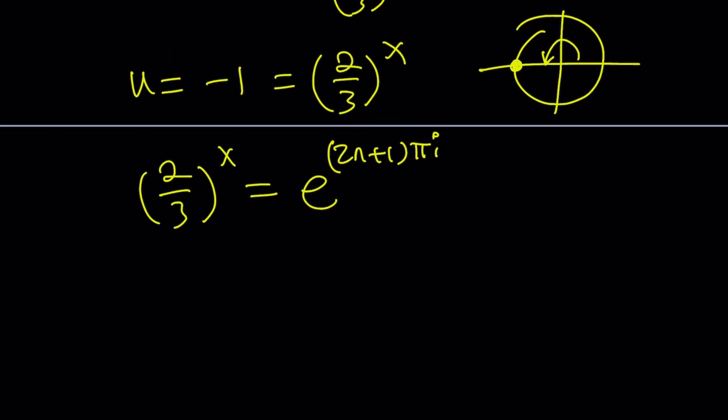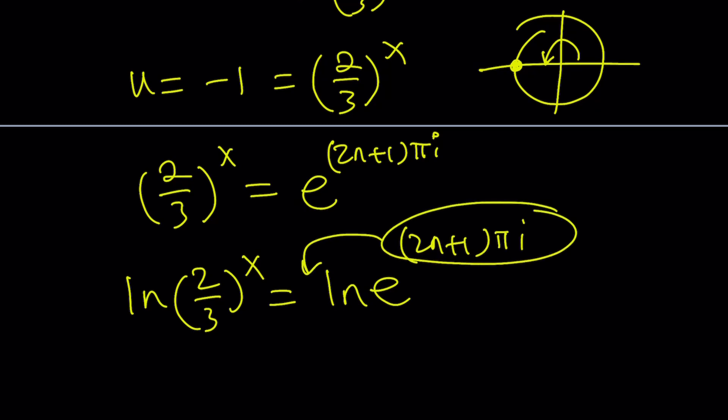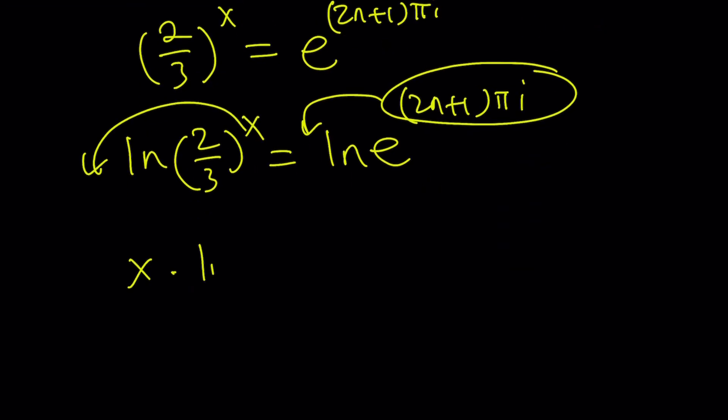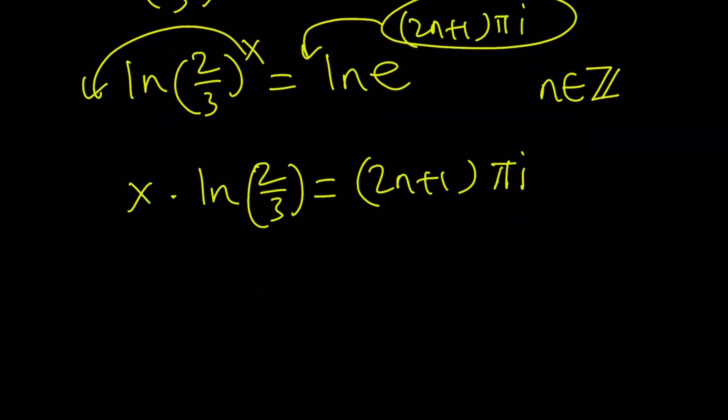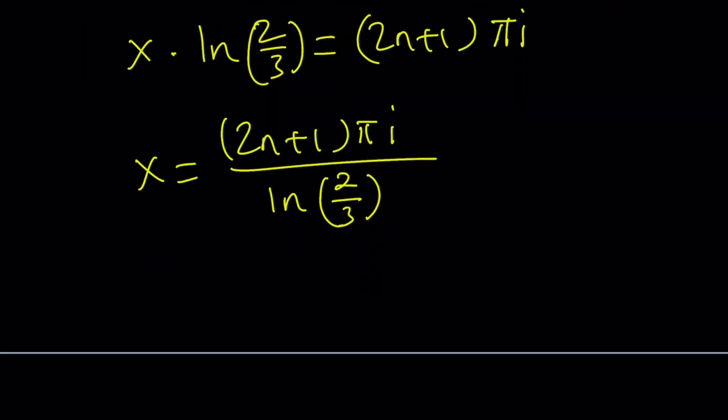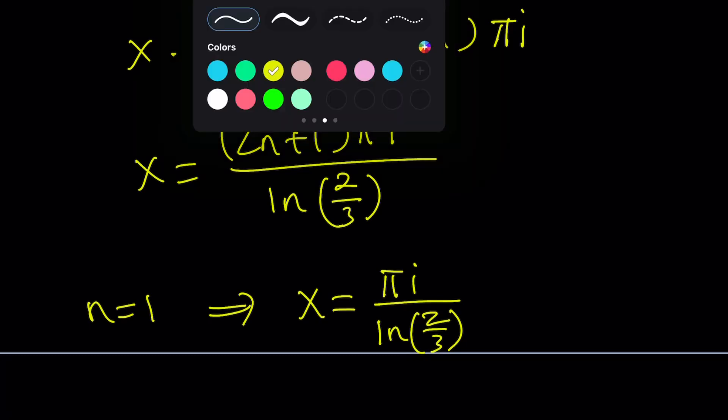From here, by ln on both sides, ln((2/3)^x) = ln(e^((2n+1)πi)). Remember, ln(e) is 1. When this moves to the front, you're going to get that. And if you move this to the front, you get x·ln(2/3) = (2n+1)πi, where n is an integer, an element of ℤ. By division, you get x = (2n+1)πi / ln(2/3). If n = 1, then you get a particular solution, which is πi / ln(2/3). The rest is left as an exercise. You can plug it in and check your work.